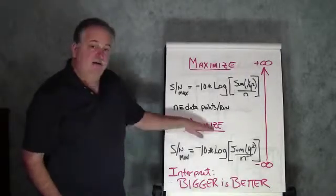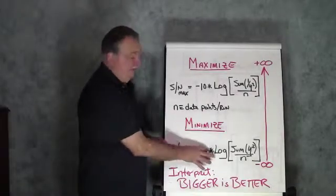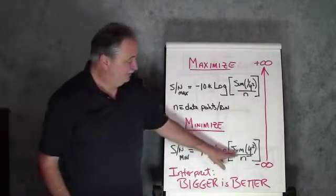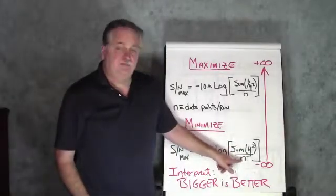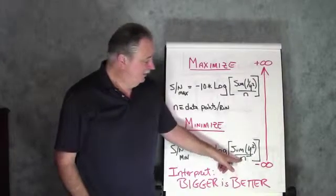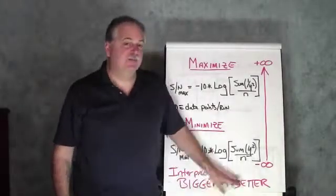Now, we have a minimizing characteristic here, and in this one, we do minus 10 times the log of the sum of y squared, divided by the number of data points that were in that experimental run. And the interpretation of this is bigger is better. Bigger is better.